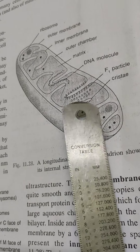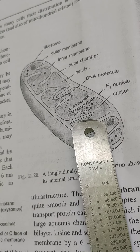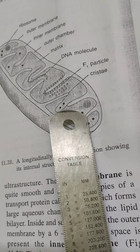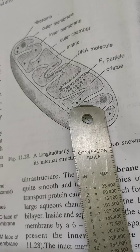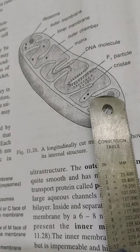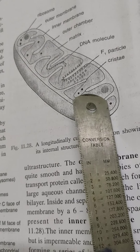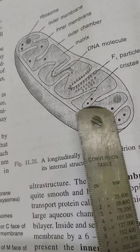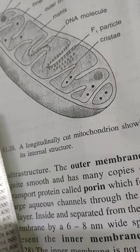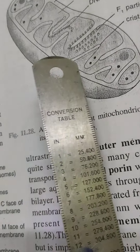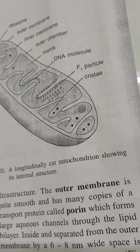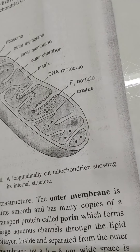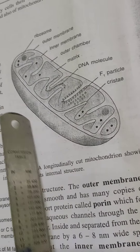Where do we get mitochondria? Mitochondria are found in all types of eukaryotic cells, but they are absent in prokaryotic cells like bacteria, blue-green algae, mycoplasma, and others. Mitochondria look like filamentous, spherical, or sausage-shaped structures.